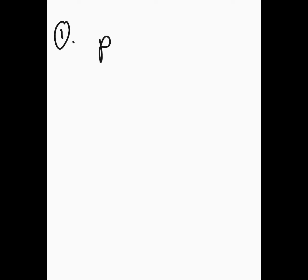Problem 1 says that after an 80% reduction of price — so that means you took the original price and you subtract 80% of it — and after an 80% reduction of price, you purchase a new player for $124. Then it says, what was the original price of the DVD player?